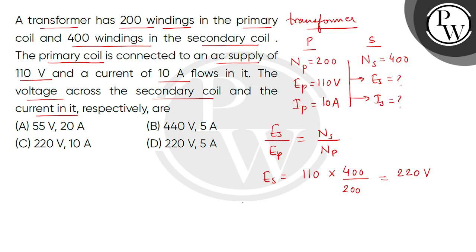अब Bacchum, हम expression apply करेंगे, IS divided by IP equal to EP divided by ES. तो यहां values put करेंगे so हमें IS का answer मिल जाएगा that is current in the secondary coil is 5 ampere.